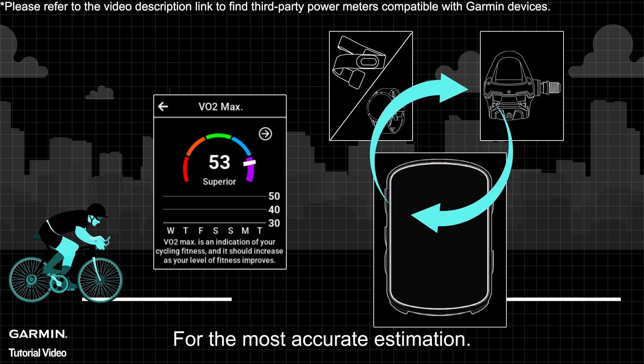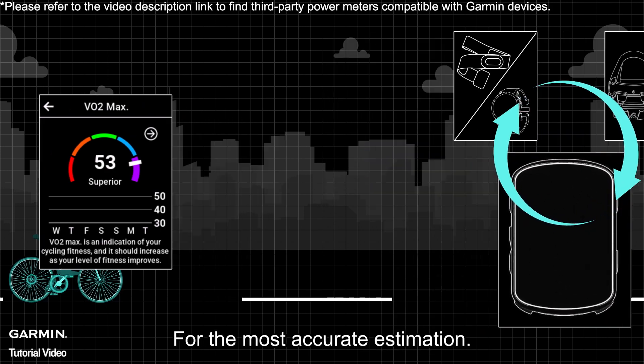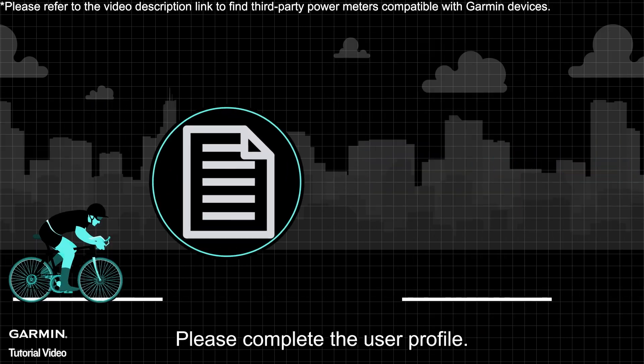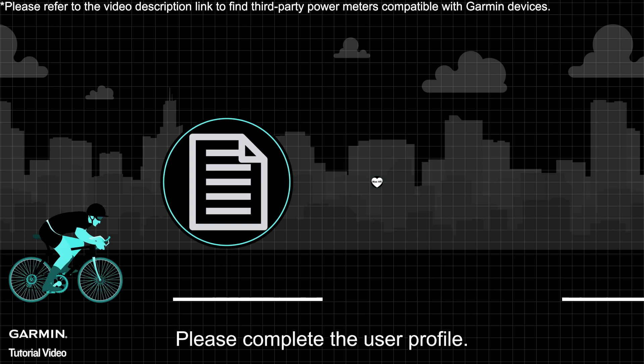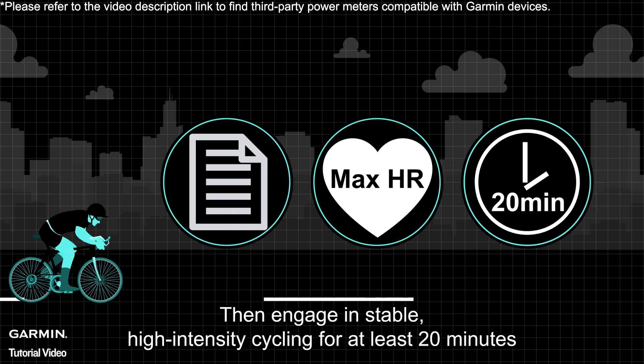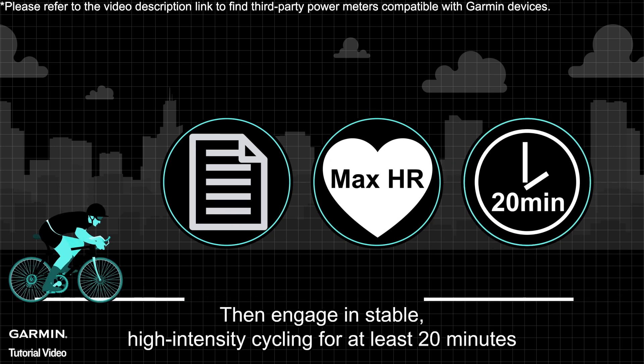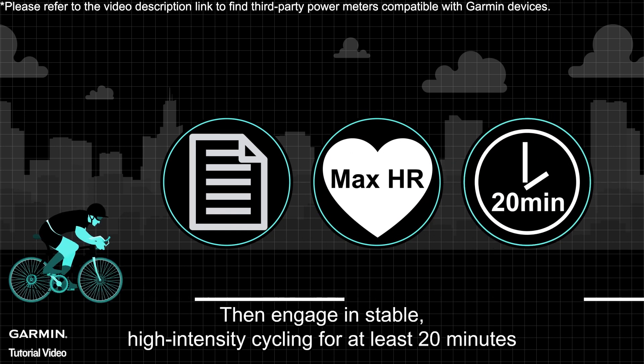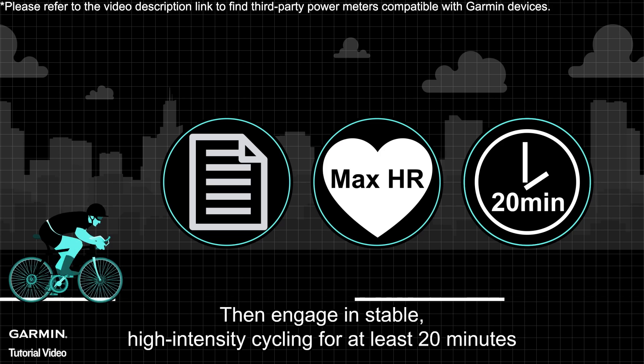For the most accurate estimation, please complete the user profile and set your maximum heart rate. Then engage in stable, high-intensity cycling for at least 20 minutes.